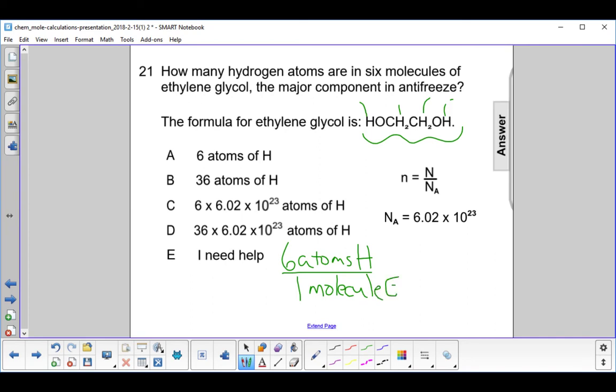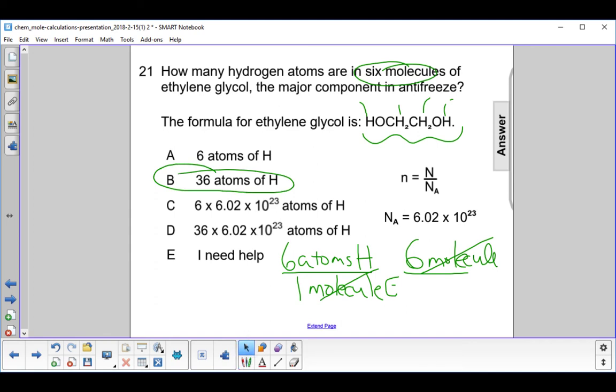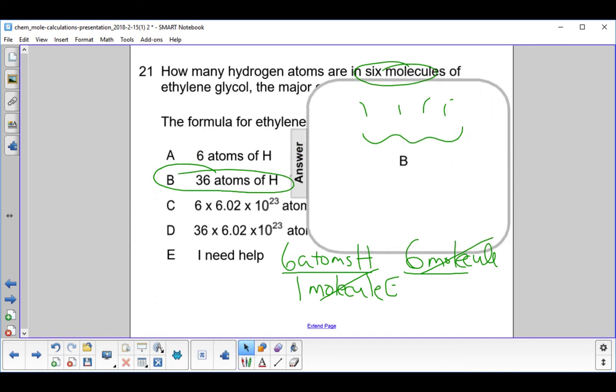We're going to put an E for ethylene. Now, how many molecules do we have? We have six. So it's basically a unit cancellation thing. We put the six molecules up here. This cancels with this. We multiply six times six and we get 36, 36 atoms of hydrogen. The answer is B.